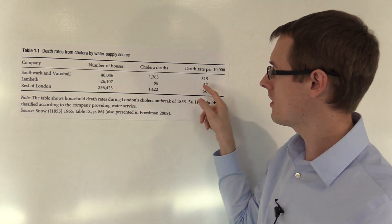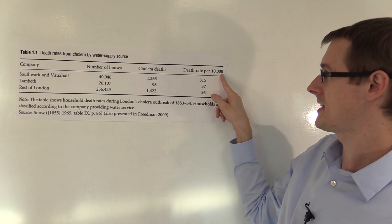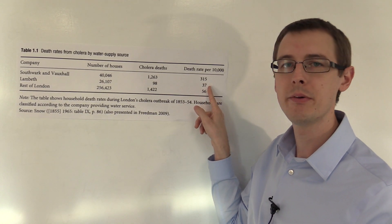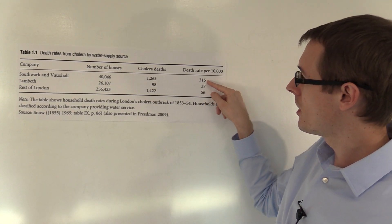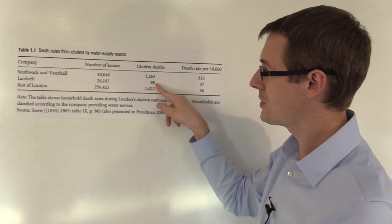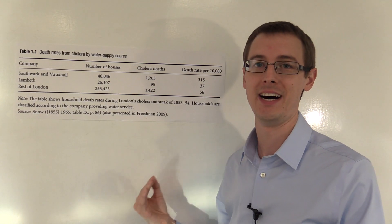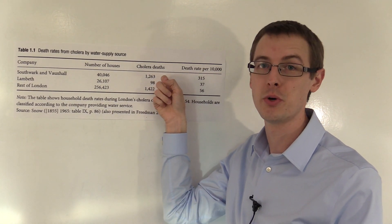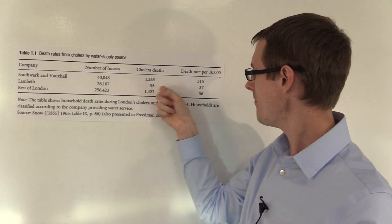If you compare the rate, in Southwark and Vauxhall, there are 315 deaths per 10,000 people, whereas for Lambeth, it was 37 deaths per 10,000 people. This is a huge increase, 315 over 37. Many, many more people died who were drinking the sewage water than the ones who were drinking the clean water.